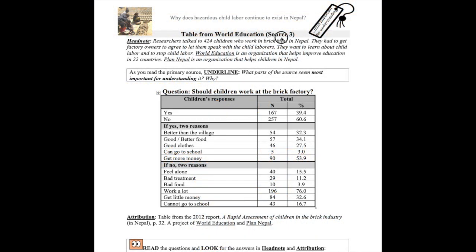Let's read source 3 for the child labor investigation, a table from World Education. Our central question is: why does hazardous child labor continue to exist in Nepal? And this gives us our purpose for reading the source.